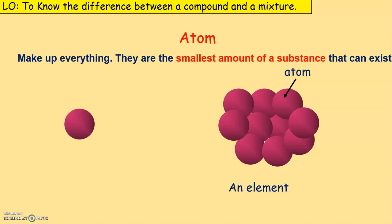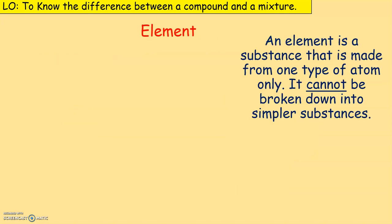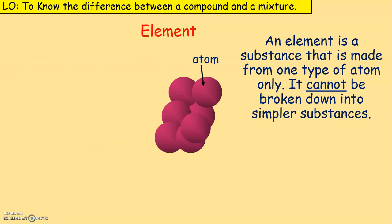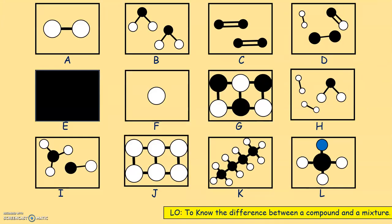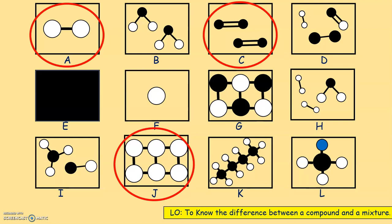An element is made up of only one type of atom. Atom A is represented by purple — if you look at the element you can see about six or seven of atom A, and that is still an element. It is so important that you understand that. An element is a substance made up of only one type of atom and it cannot be broken down into simpler substances. That is why it's underlined — an element cannot be broken down into simpler substances.